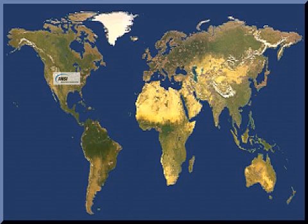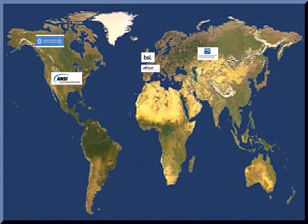In the US, we have ANSI, that is American National Standards Institute. In Canada, we have SCC, Standard Council of Canada. CEN is present in Europe, that is Committee of European Normalization. In Britain, it is British Standard Institute, BSI. APNOR is there in France, that is Association Française. In Germany, we have DIN. In India, we have Bureau of Indian Standards. And in Japan, we have Japanese Industrial Standards Committee, JISC.